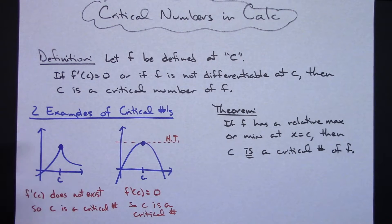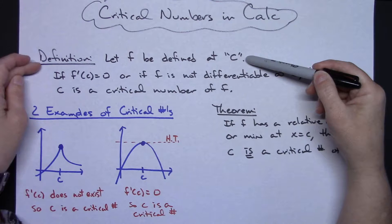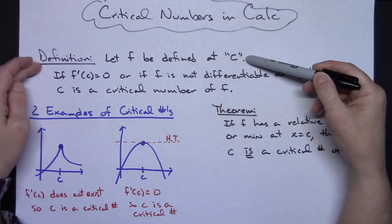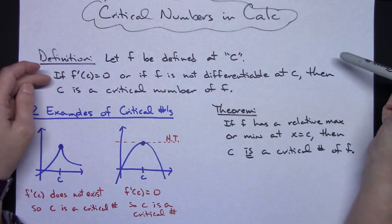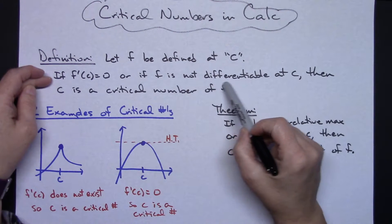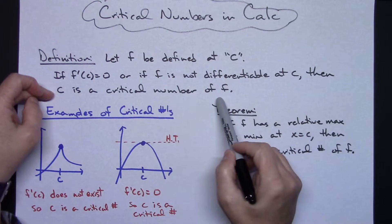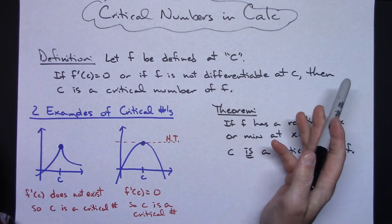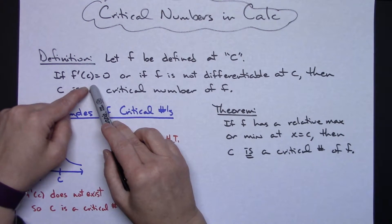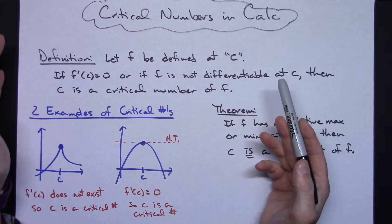So a critical number — the definition states that if F is defined at C, so the original function has to be defined at C, which is a very important part of this definition. If F prime of C equals zero, or if F is not differentiable at C, then C is a critical number of F. So we've got two scenarios: either the derivative equals zero, or the derivative doesn't exist, then we know we've got a critical point.